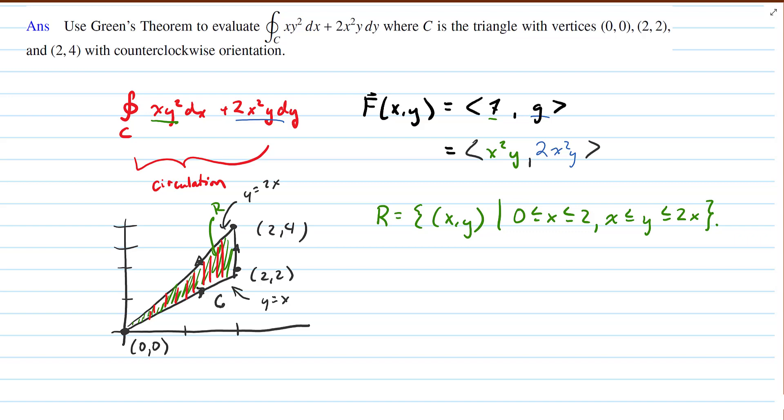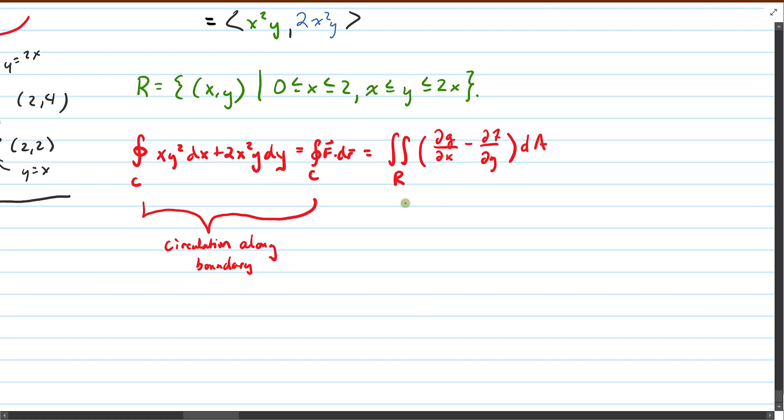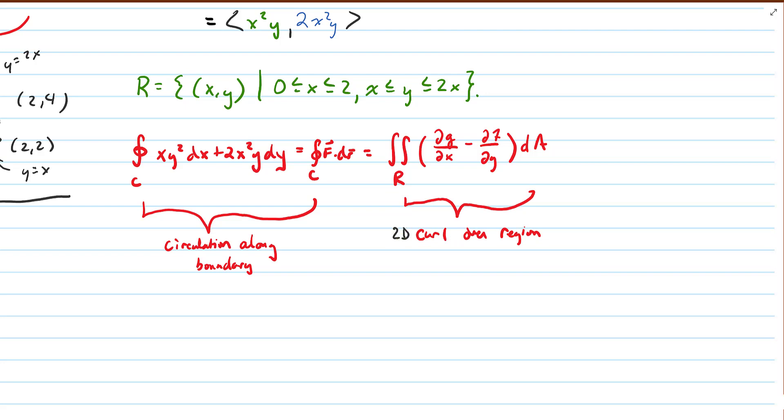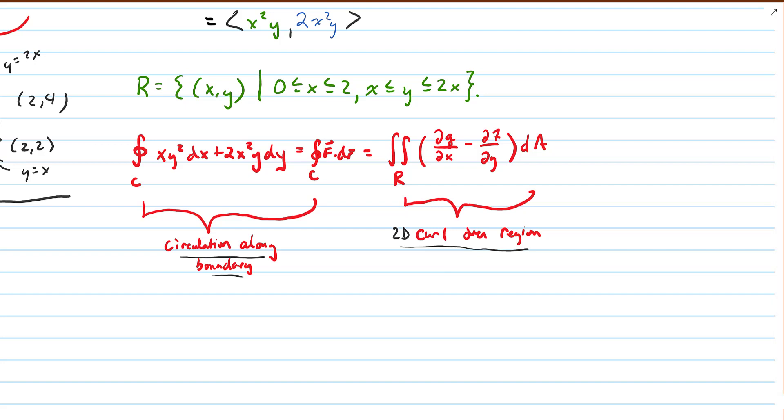So now we've got our region described and our vector field. Let's go ahead and state Green's theorem real quickly. As a reminder, Green's theorem tells us that instead of evaluating circulation along a boundary, which does require a parameterization of our curve, and we'll be able to avoid that, we could go ahead and evaluate the 2D curl over the entire region, transforming this circulation problem of one single integral into a double integral problem.